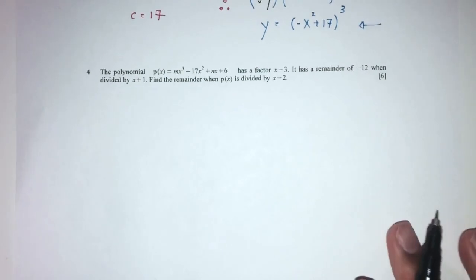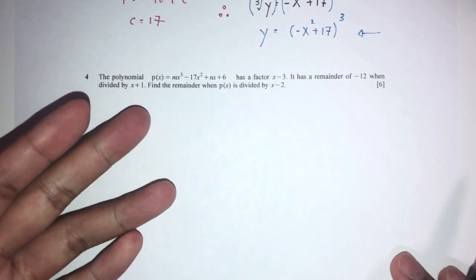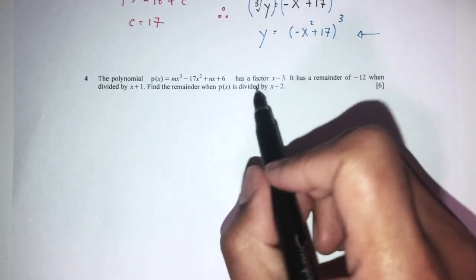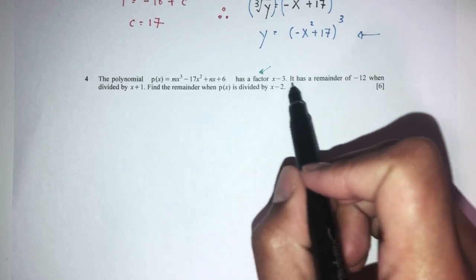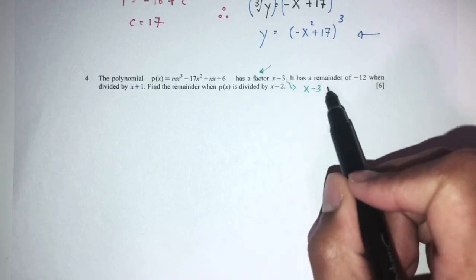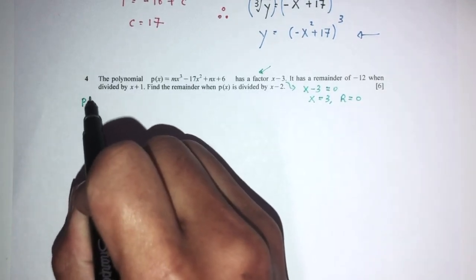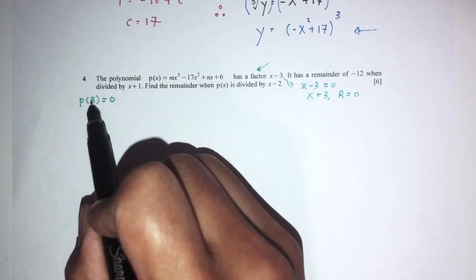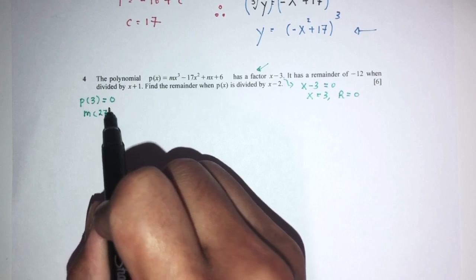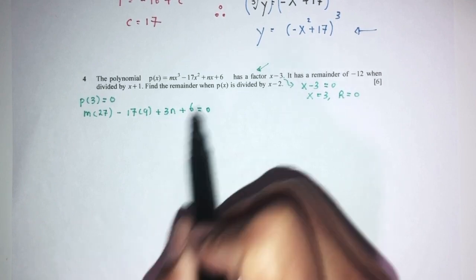Let's move on to question number 4. The polynomial p(x) is a cubic with a factor of (x minus 3). When x equals 3 the remainder is 0, so p(3) equals 0. Substituting x equals 3: 27m minus 17 times 9 plus 3n plus 6 equals 0. Simplifying and dividing by 3 gives 9m plus n minus 49 equals 0, so n equals 49 minus 9m. This is equation 1.